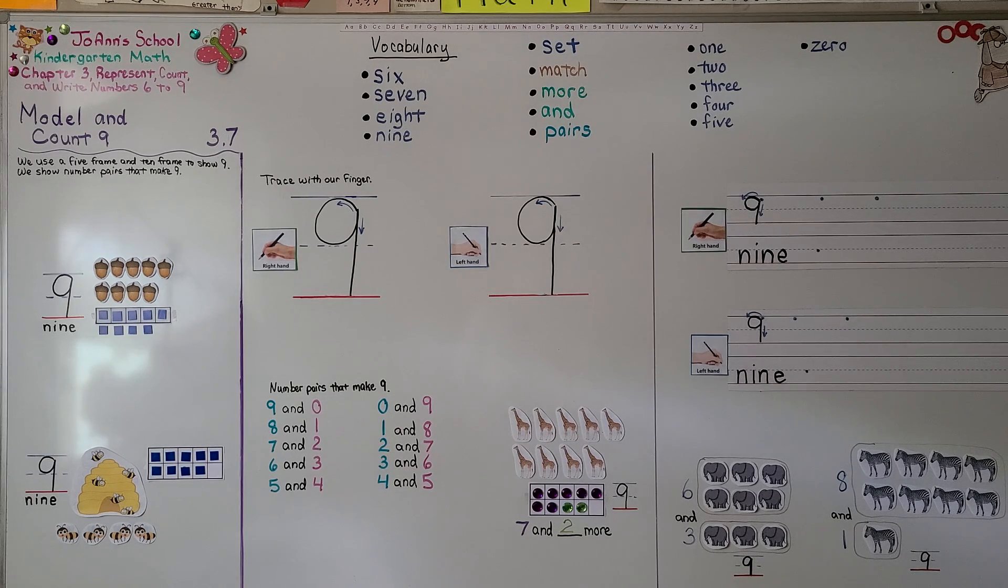Our next lesson, 3.8, we're going to count and write to 9. We're going to write right-handed and left-handed, and I hope you'll join me. Have a wonderful day. Bye!